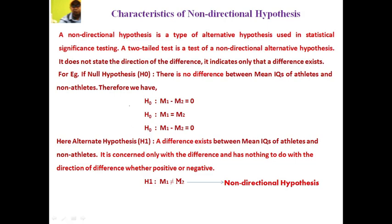The null hypothesis states that there is no difference between the mean IQ of athletes and non-athletes, meaning M1 equals M2, or M1 minus M2 equals zero. The alternate hypothesis states that a difference exists between the mean IQs of athletes and non-athletes, i.e., M1 is not equal to M2. This is the case of a non-directional hypothesis.